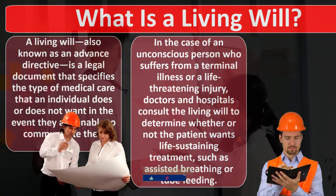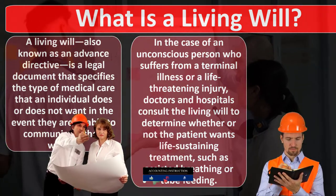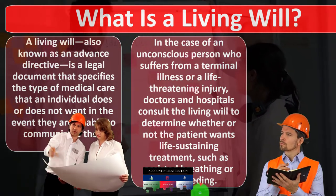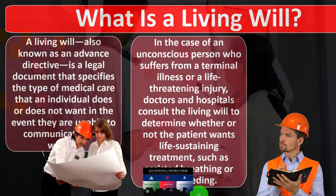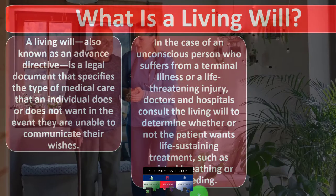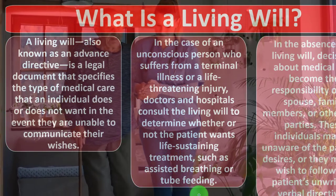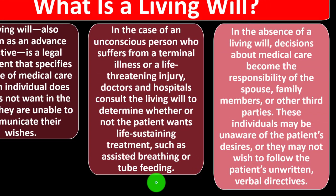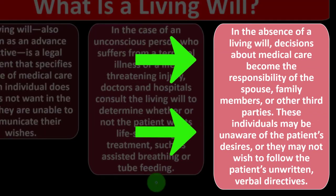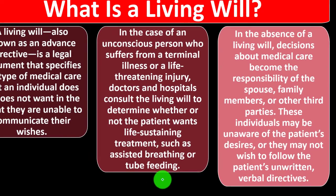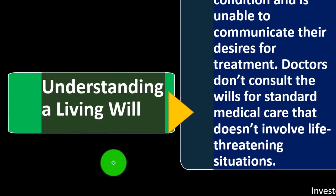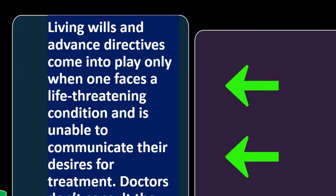Doctors consult the living will to determine whether or not the patient wants life-sustaining treatment such as assisted breathing or tube feeding. At that point you can't make the decision yourself, so you might want to make that decision beforehand, making it easier for medical professionals and family to move forward with your wishes. In the absence of a living will, decisions about medical care become the responsibility of the spouse, family members, or other third parties, who may be unaware of the patient's desires or may not wish to follow verbal directives.